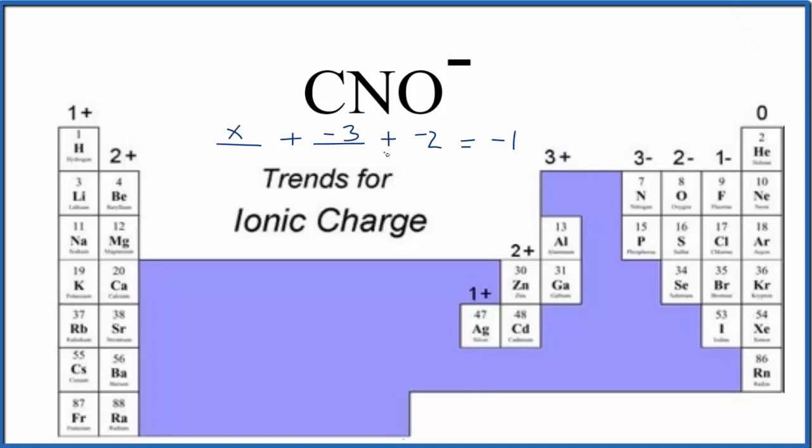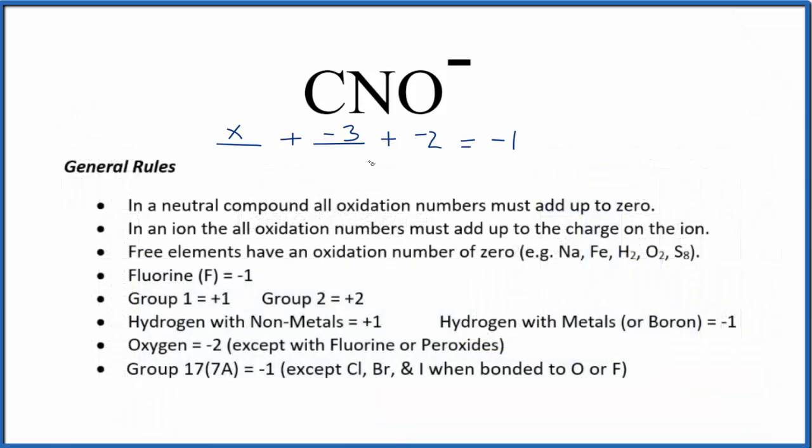Then we can solve for X. So X minus five equals minus one. We add five to both sides, X will equal a positive four. So the oxidation number on the carbon, that's plus four. We said the nitrogen is minus three and the oxygen is minus two. If you add all of these numbers up here, you get minus one. We have this minus charge here on the ion.